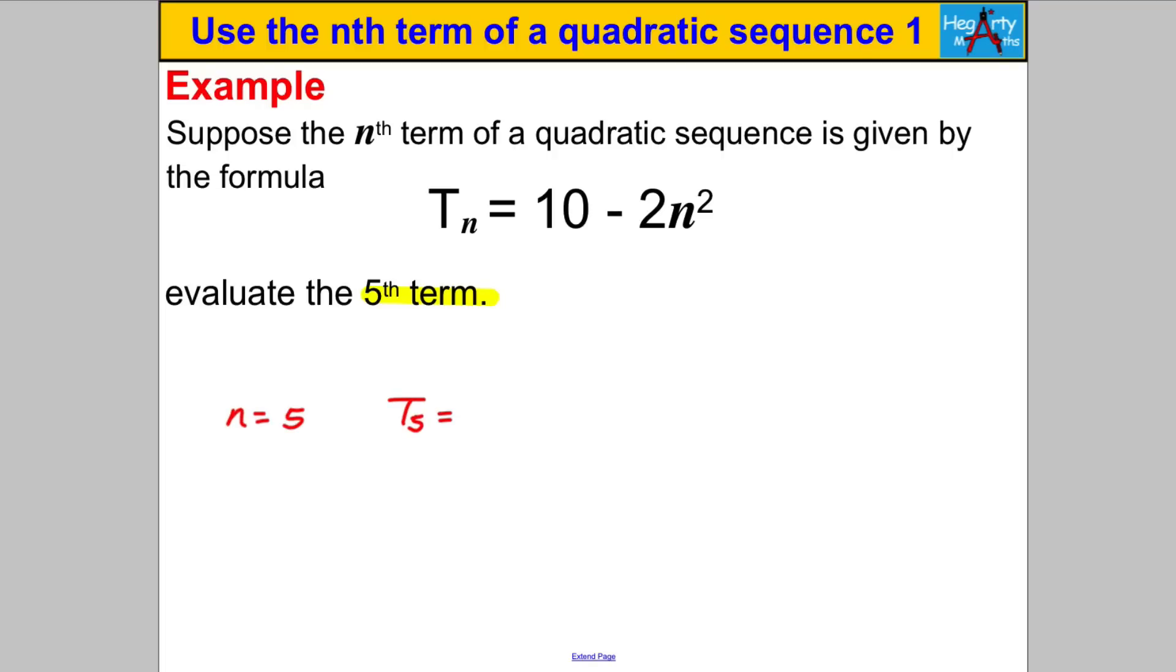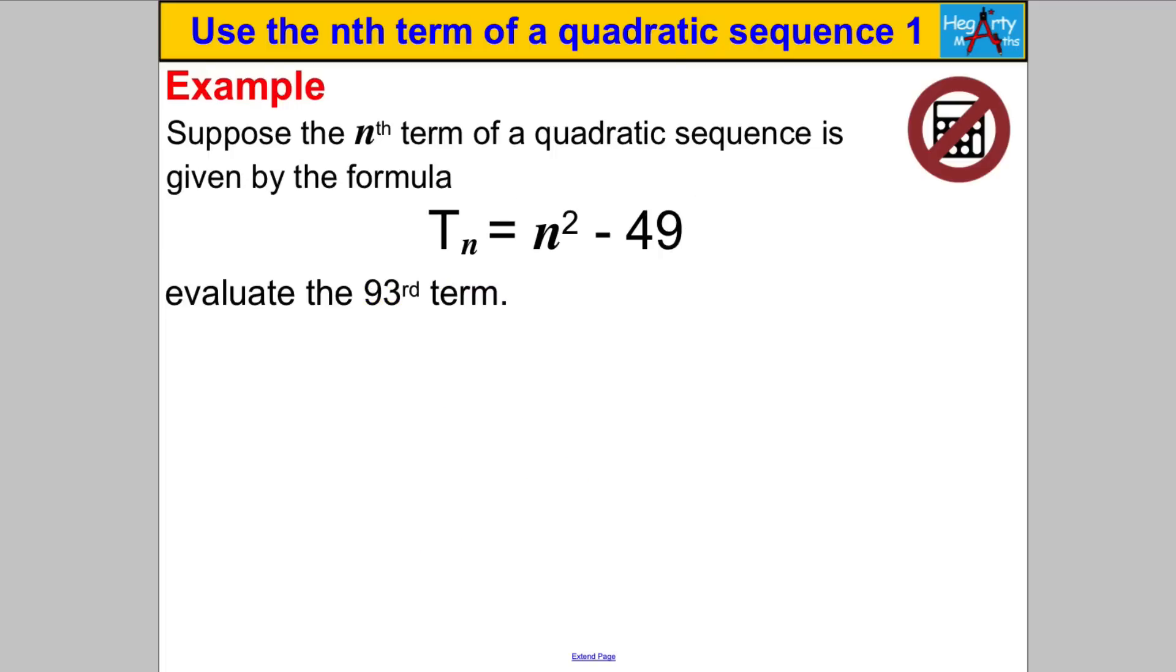So this time we're going to let n equal 5 and we're going to work out T_5 that's going to be 10 subtract 2 brackets 5 squared. That's 10 subtract 5 squared which is 25, 2 multiplied by 25 is 50, 10 subtract 50 is going to be negative 40 so T_5 is equal to negative 40. And last one for us to try in this video, pause the video have a go at this don't use a calculator whatever you do.